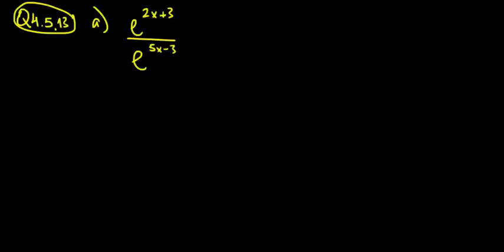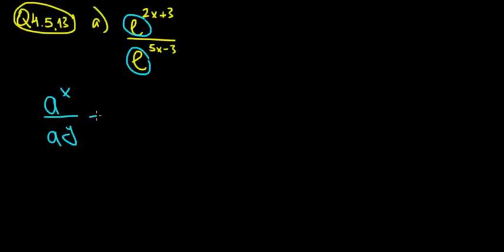We have a division with the same base — base e — and different powers. The general formula is: a to the power of x divided by a to the power of y equals a to the power of x minus y. So we keep the base but subtract the powers.